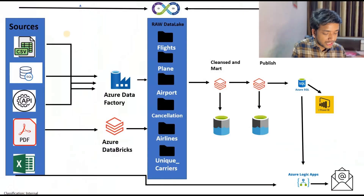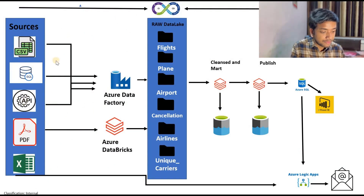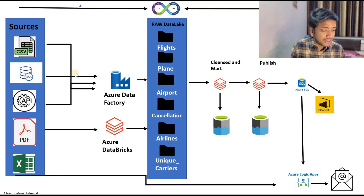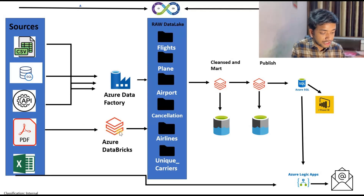Now let's understand the architecture. Here, as you can see, the sources we have are CSV files, SQL files, APIs, PDFs, and Excel. What we have done is copy all these things — CSV means blob storage or maybe a Gen2 location, SQL tables from one database, API, and so on — all copied using ADF and put into the raw data lake. For PDFs I used Azure Databricks to copy from source to the sync layer.